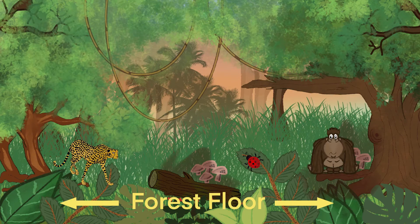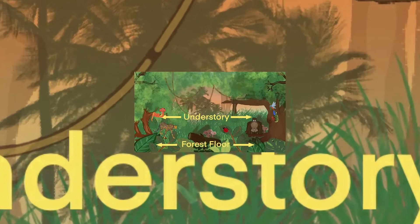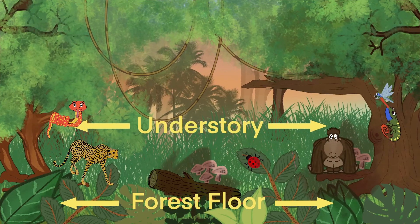Next up is the understory layer. It is a sheltered layer as well, and gets very little sunlight. Trees here are shorter, and here you have predators who live on trees, such as different species of snakes and different reptiles.